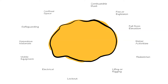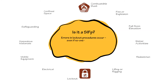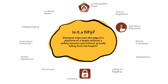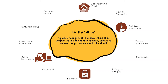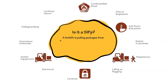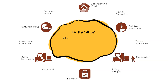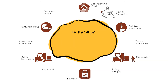Is it a SIFP if there is an excessive accumulation of wood dust even if no combustion occurs? What about if errors in lockout procedures occur even if no one was harmed? How about if someone trips near the edge of a platform at height without a safety harness and without actually falling? Is it a SIFP if a piece of equipment is backed into a shed support post and the roof partially collapses even though no one was in the shed? What if a forklift is pulling packages from overhead and drops the load, narrowly missing a pedestrian? Is that a SIFP? Is it a SIFP if someone's loose-fitting glove was caught in a moving pulley even though the person's fingers were not caught and no injury occurred?